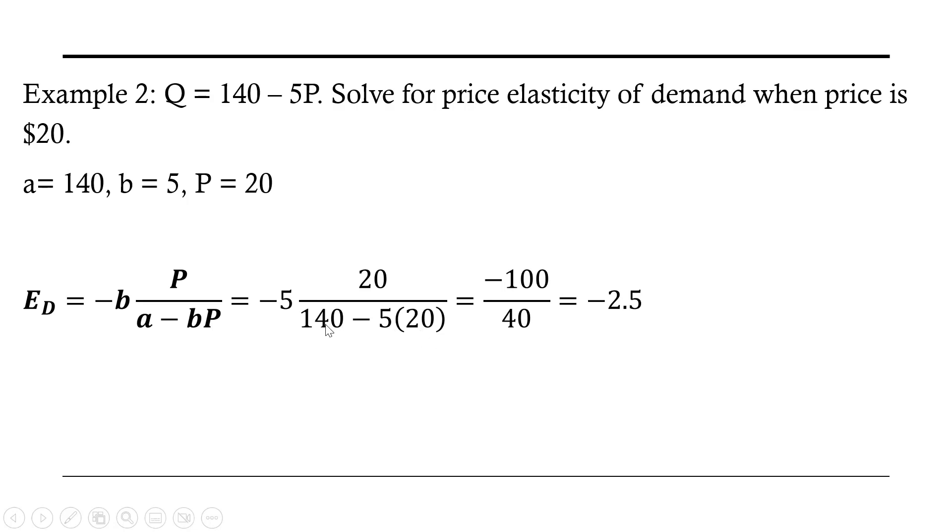And so what do we get? We get 140 minus 100 in the denominator. That leaves us with 40. This minus 5 times 20 gives us the minus 100 in the numerator. And that will simplify down to minus 2.5 for the price elasticity of demand. Okay, that's it.